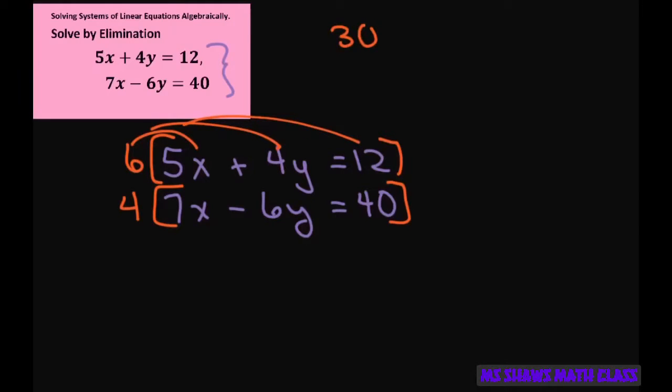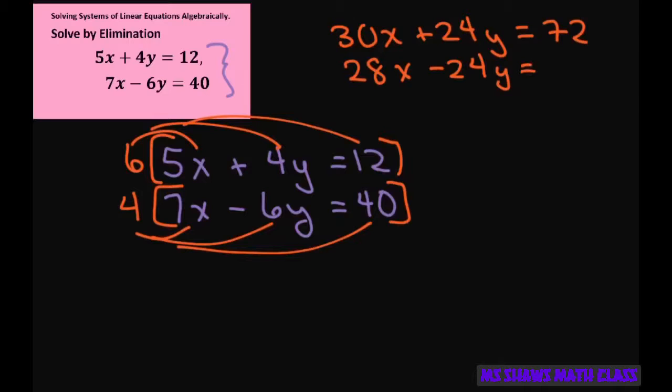This is going to be 30X plus 24Y equals 72. The second one, doing all threes, is going to give you 28X minus 24Y equals 160.